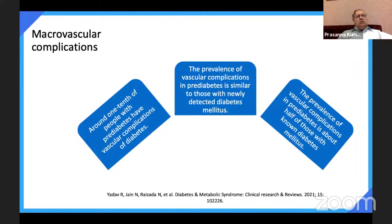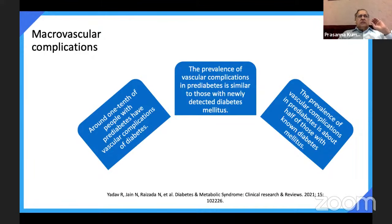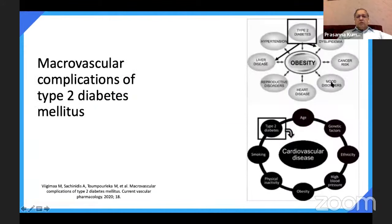Intense blood sugar control is very important. Microvascular complications are pathognomonic of diabetes, whereas macrovascular complications can occur due to other factors like dyslipidemia, obesity, smoking, and hypertension. Diabetes contributes only about 16% to coronary artery disease. As age advances, complications are more. Men have more cardiovascular disease than women. Asians have more cardiovascular complications. High blood pressure, obesity, lack of physical activity, and smoking all contribute.